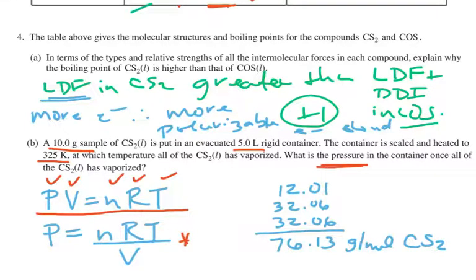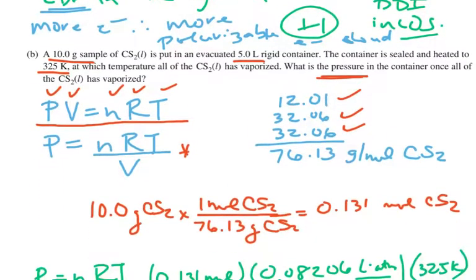Well, first thing I need to do is change my grams into moles. So, CS2, I have carbon, I have sulfur, and sulfur. Take those numbers from the periodic table, add them together, 76.13 grams. Okay, I'm going to change that into moles, very simply. So, 10 grams, 76.13 grams per mole, we get 0.131 moles of CS2.